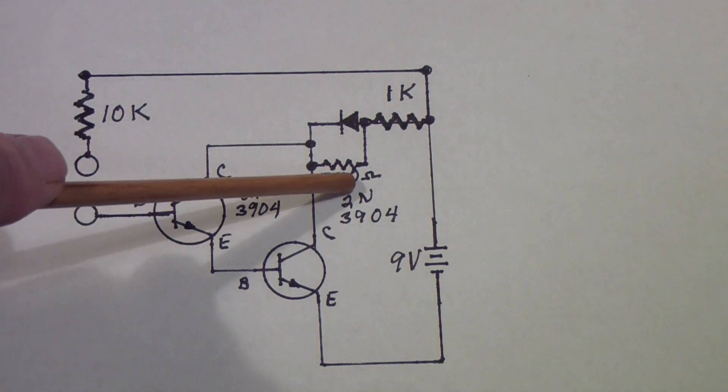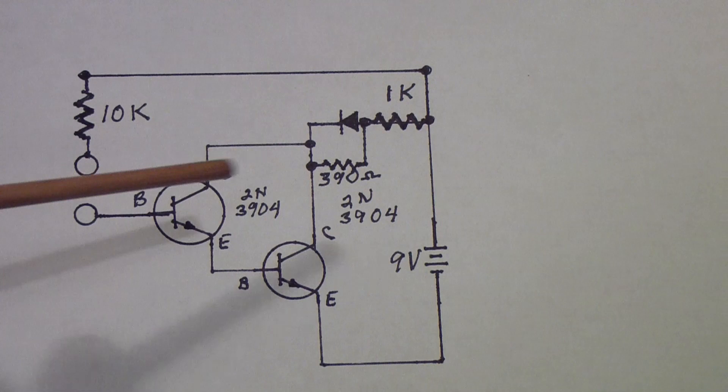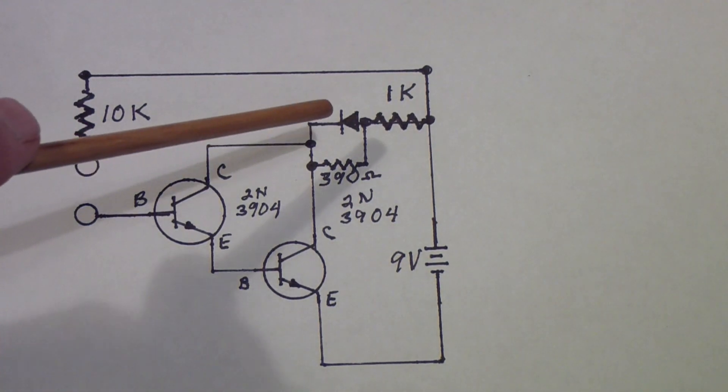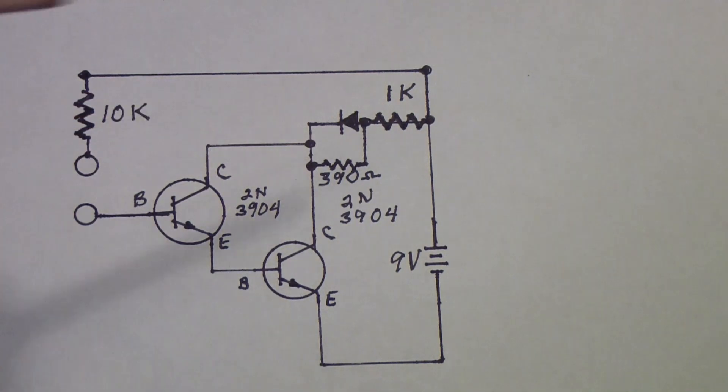You could of course raise this resistor and it would sense even more, but then it starts to become sensitive. If you pick up the test leads it'll read through the test leads and the LED will start to come on. Play with it a little bit if you're interested and see what I mean, but this is your calibration point.